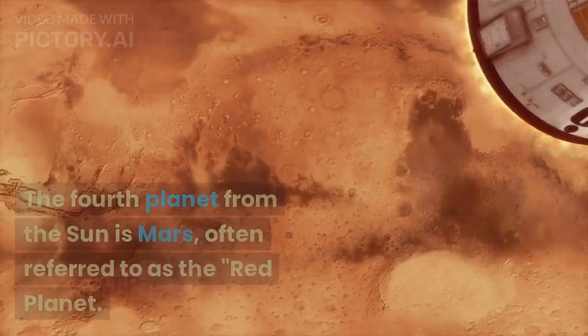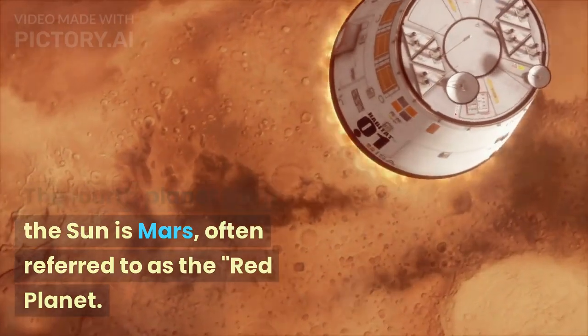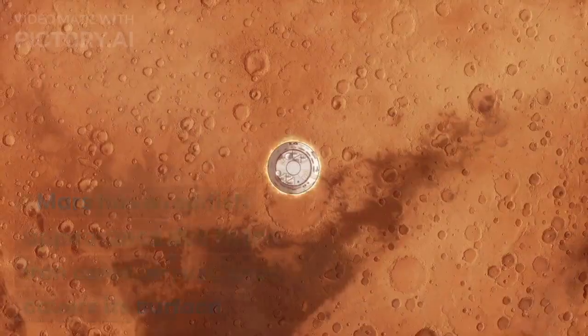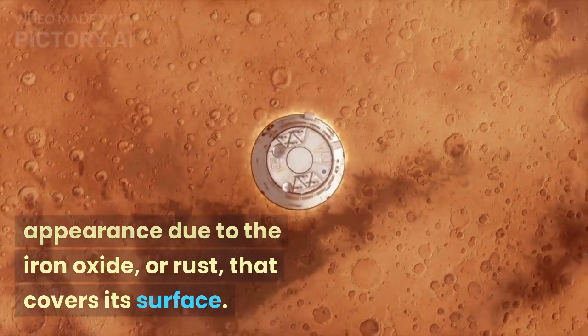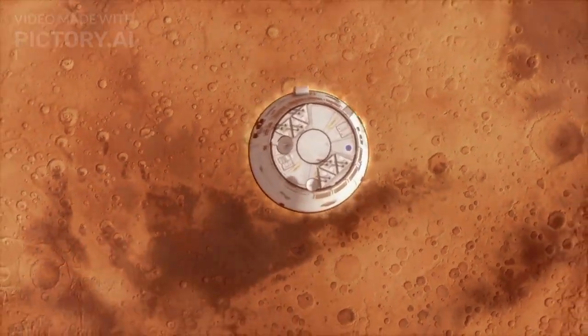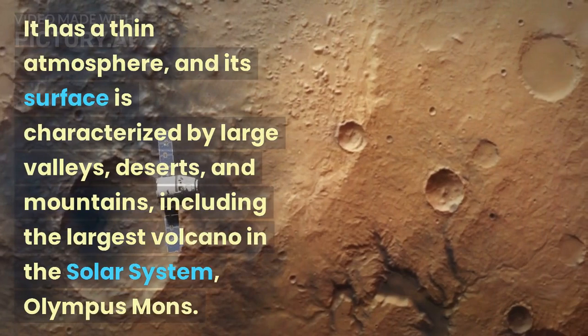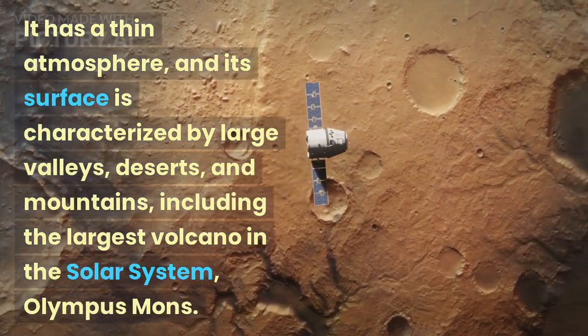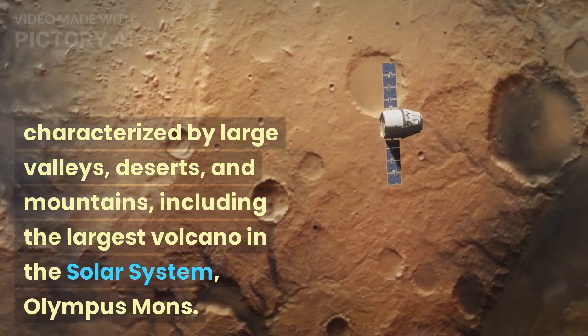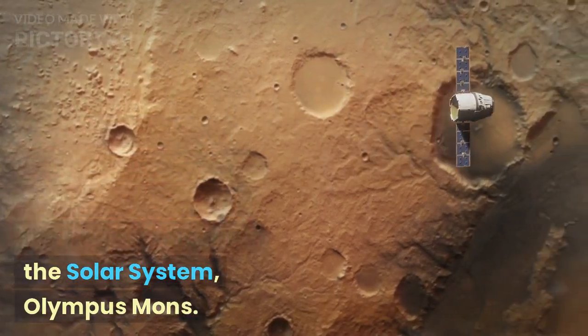Mars. The fourth planet from the sun is Mars, often referred to as the red planet. Mars has a reddish appearance due to the iron oxide, or rust, that covers its surface. It has a thin atmosphere, and its surface is characterized by large valleys, deserts, and mountains, including the largest volcano in the solar system, Olympus Mons.